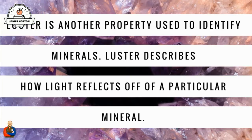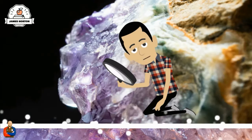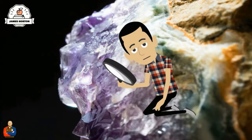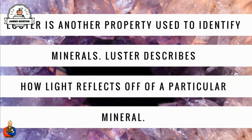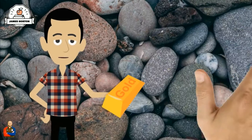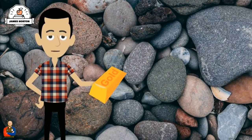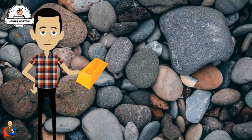Luster is another property used to identify minerals. Luster describes how light bounces off of a mineral. Some minerals are shining like metal — they're known as metallic minerals. Others are not shining like metal, and they're known as non-metallic minerals.